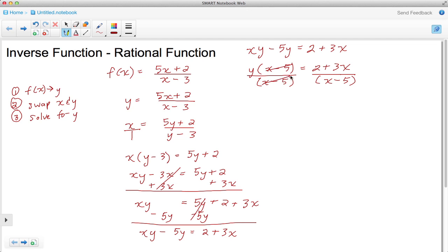Those cancel and I'm left with y is equal to 2 plus 3x over the quantity x minus 5 and if I put that in the notation using the f I see that the inverse of the original function is let me change this around 3x plus 2 when I add the order doesn't matter over x minus 5 so this here is in fact the inverse derived. Now let's take a look at the calculator.